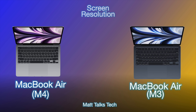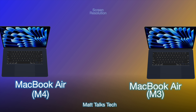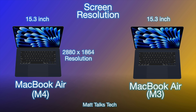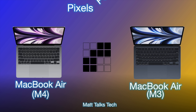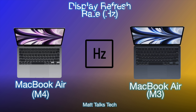For screen resolution, the 13.6-inch model has a resolution of 2560 by 1664 on both generations, and the 15.3-inch model has a resolution of 2880 by 1864 on both models. All four models — the 13-inch and 15-inch from both generations — have 224 pixels per inch (224 PPI).